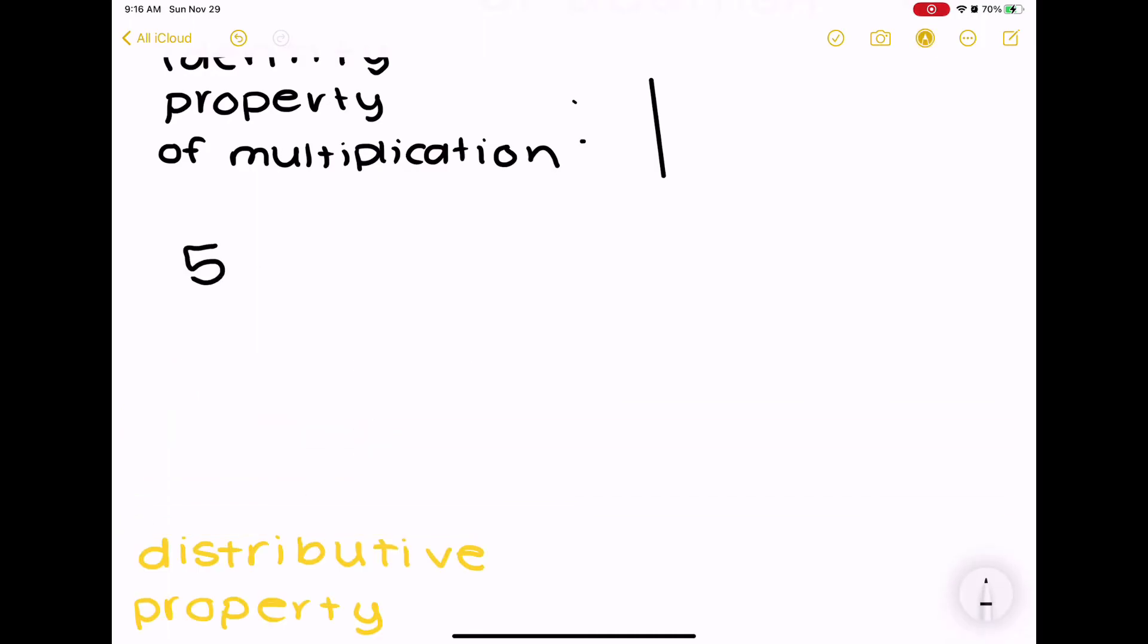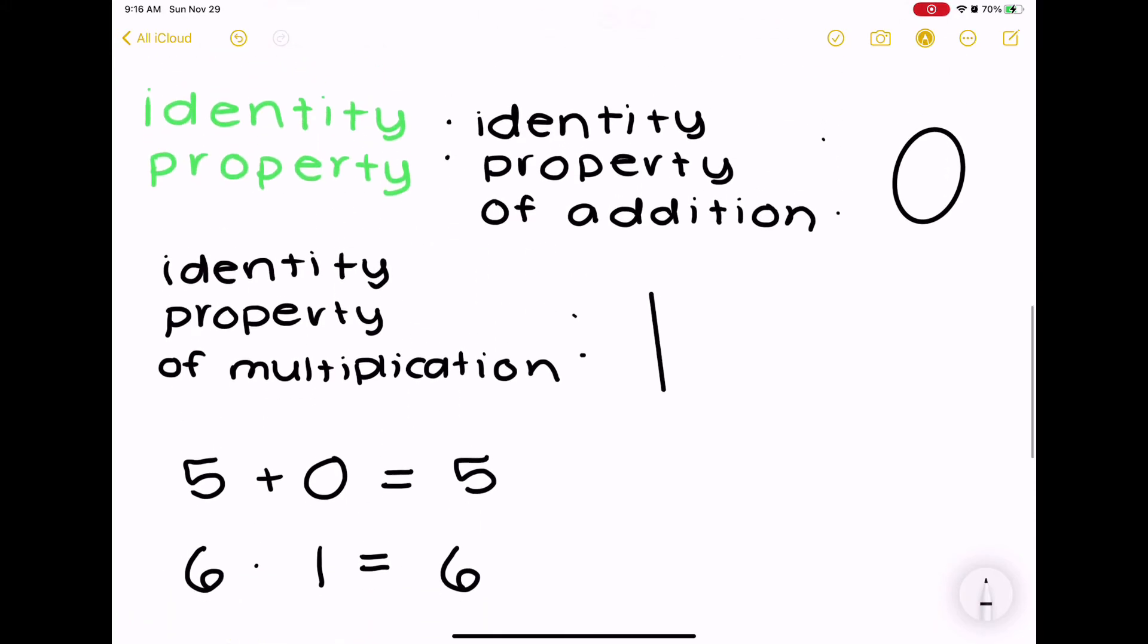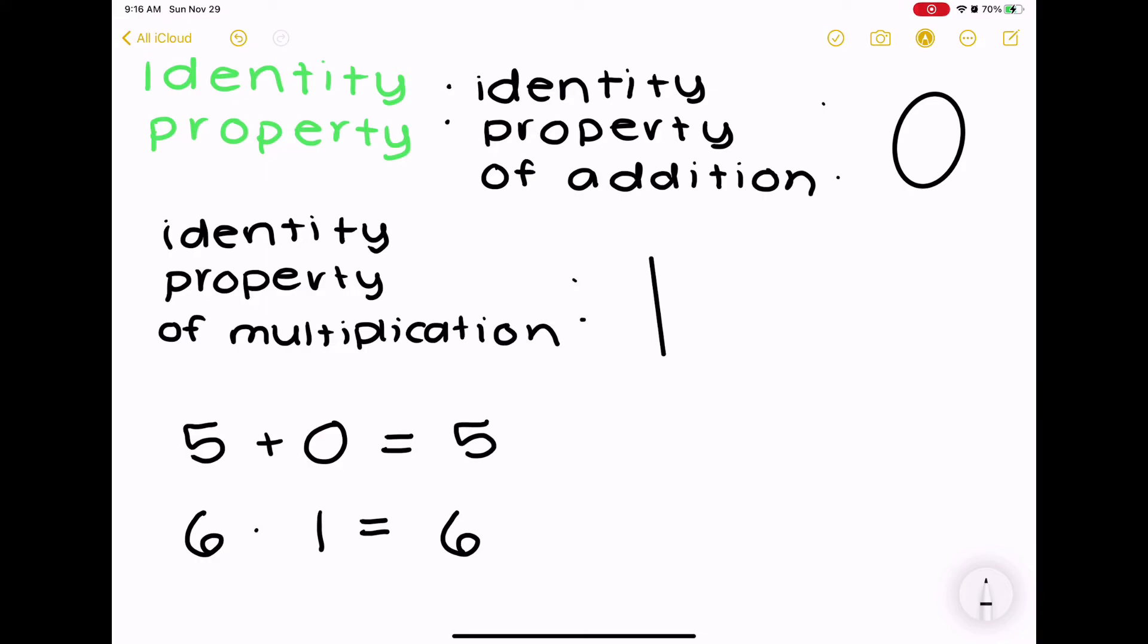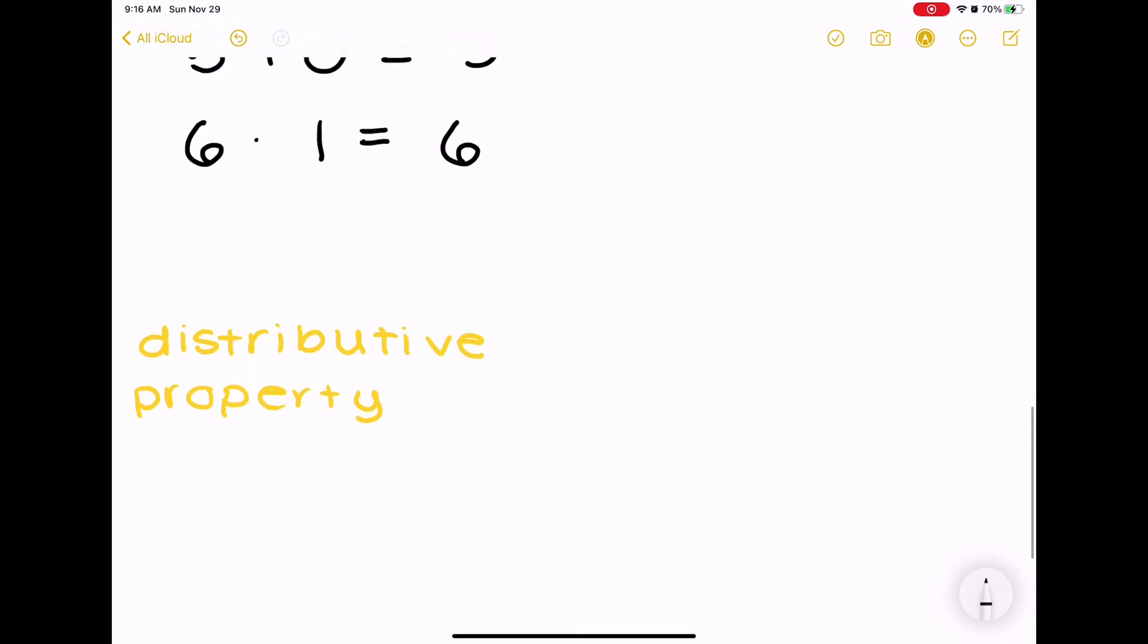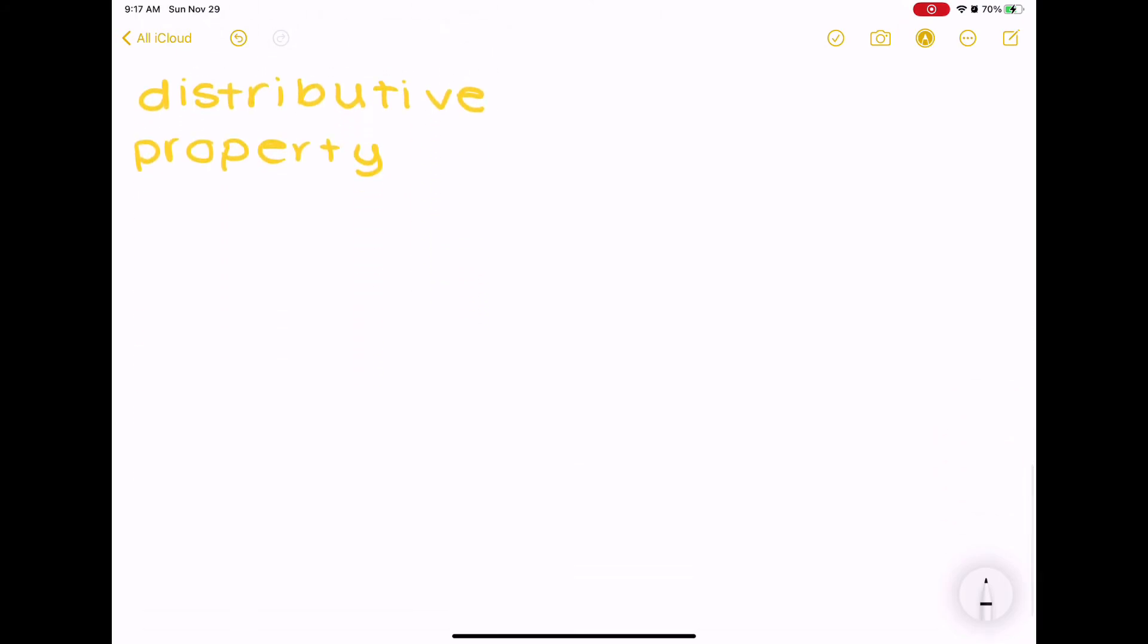You might be like, why? Well, if you take a number and add 0, it's equal to the number, and if you multiply a number by 1, it's still that number. So, that means if you take a certain number and multiply it by 1, it will always be that number. That's why there's only identity property for addition and multiplication, not subtraction and division.